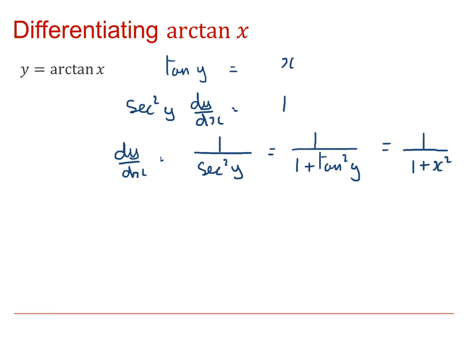Or in other words, the derivative, d by dx of Arctanx, is equal to 1 over 1 plus x squared. Note that x squared is always greater than or equal to 0, and therefore the derivative is always going to be positive.